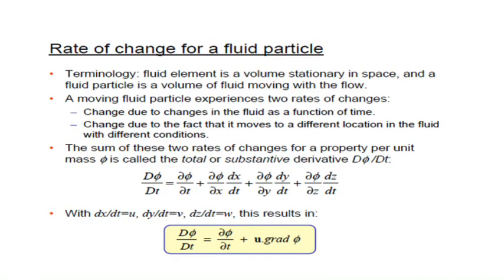Next comes the rate of change of a fluid particle. The fluid element is a volume stationary in space, and the fluid particle is a volume of fluid moving with the flow. It experiences two rates of change: one depends only on time, and the other is due to it moving to a different location with different conditions. Summing these two rates of change for a property per unit mass φ gives the total or substantial derivative Dφ/Dt = ∂φ/∂t + u·∇φ, where dx/dt, dy/dt, dz/dt are substituted as u, v, w.